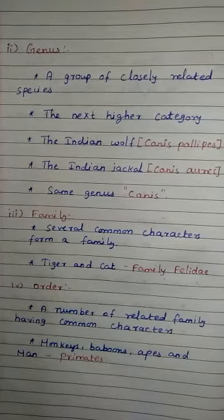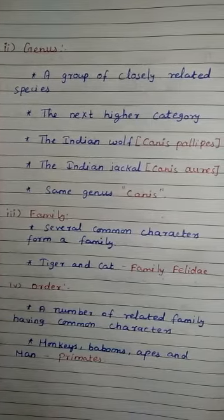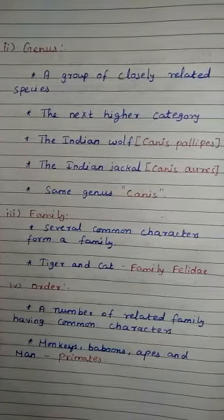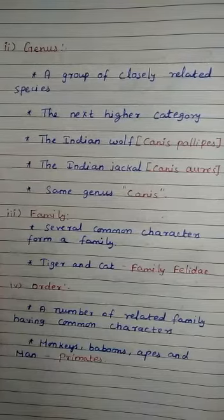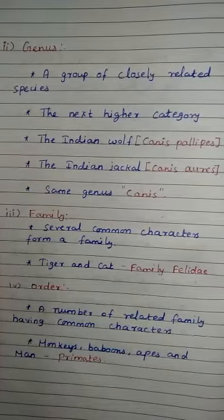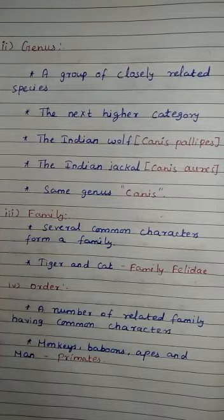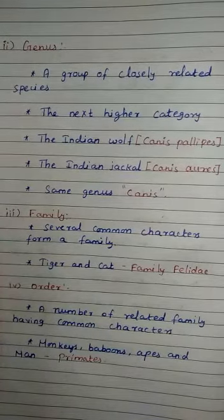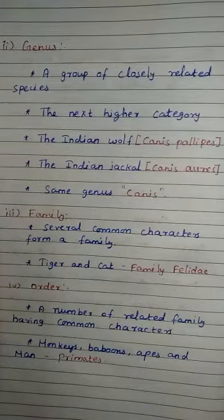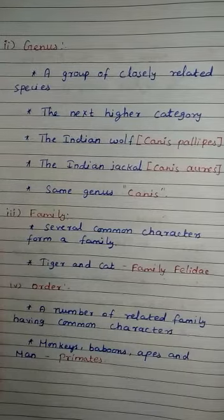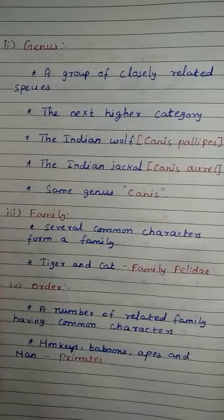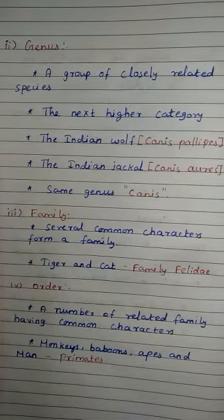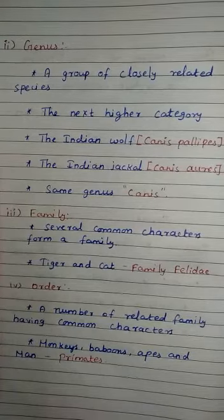The next level is Family. A group of genera with several common characters forms a family. For example, leopard, tiger, and cat share some common characteristics and belong to the larger cat family Felidae.